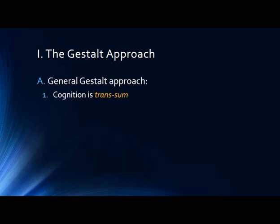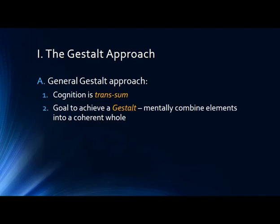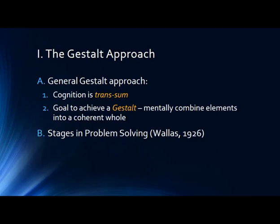The Gestalt psychologists thought that cognition is trans-sum — you put pieces together and end up with something new, something other than just the parts. According to the Gestalt psychologist, the goal is to achieve a mental Gestalt, where you assemble the pieces of the puzzle and get a coherent whole, gaining a new insight into the problem. You get this full mental understanding, the pieces fall together, and you have a solution.